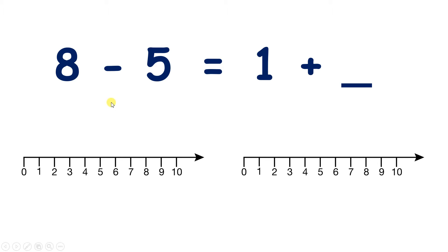Now we have 8 take away 5 equals 1 plus something, and we have to find that missing number. So let's do 8 subtract 5, we're on 8, and we can take 1, 2, 3, 4, 5 jumps backwards, and we've landed on 3.